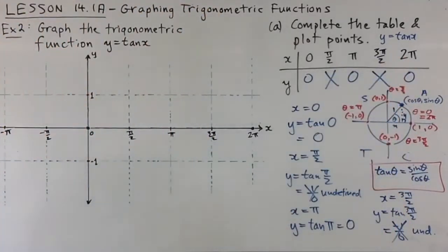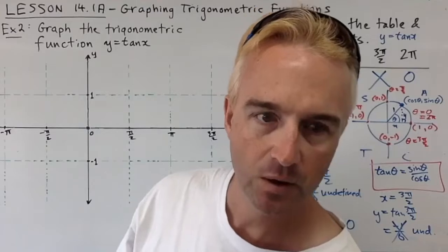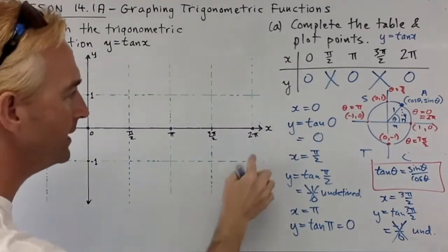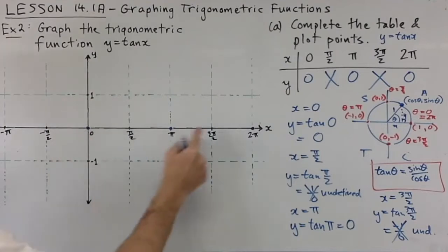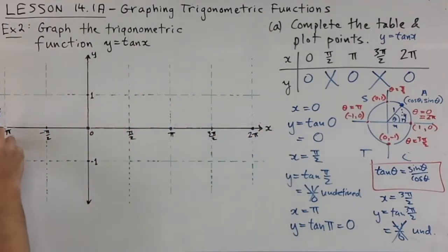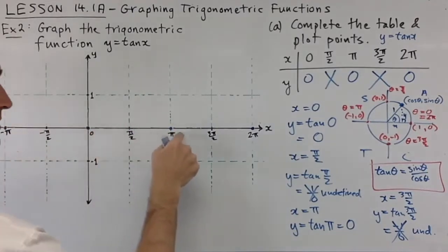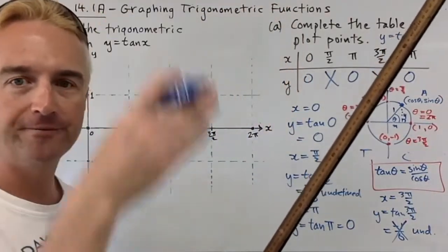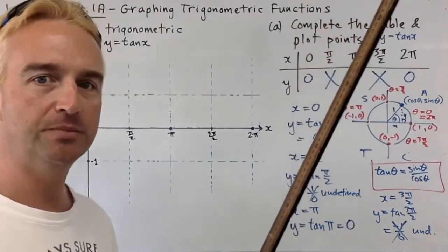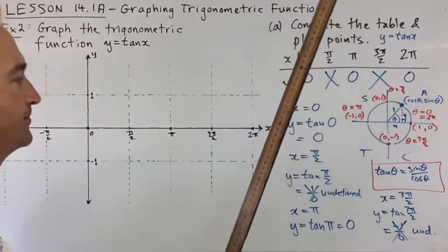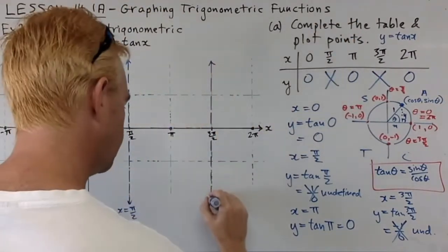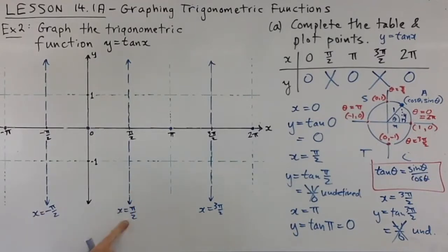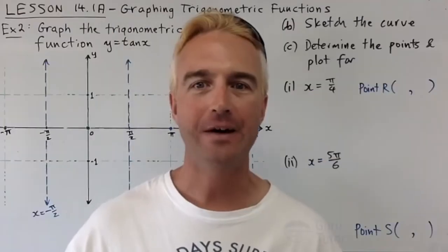When we have undefined x-values we draw vertical asymptotes. The y = 0 points occur at 0, π, and 2π — so every π we get zero. The undefined points (x's) become vertical dotted asymptote lines. We draw those in and label them: x = −π/2, x = π/2, x = 3π/2. Don't forget to add arrows since the branches continue up and down.